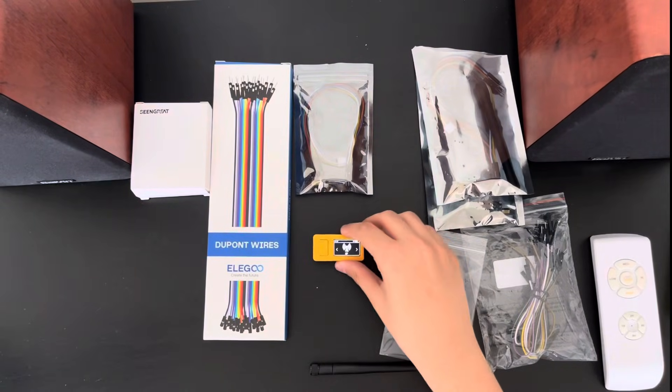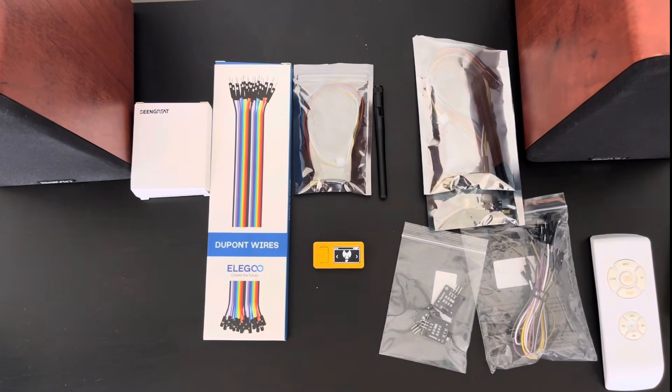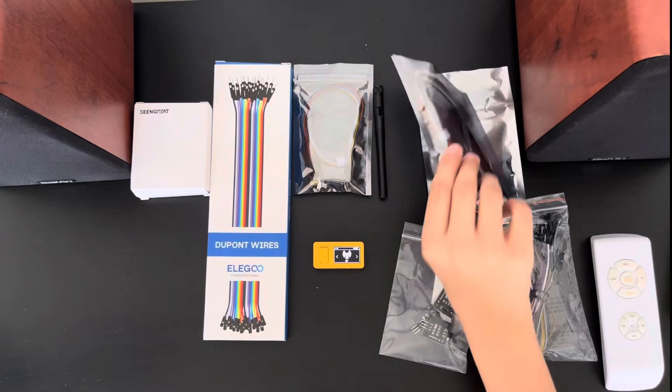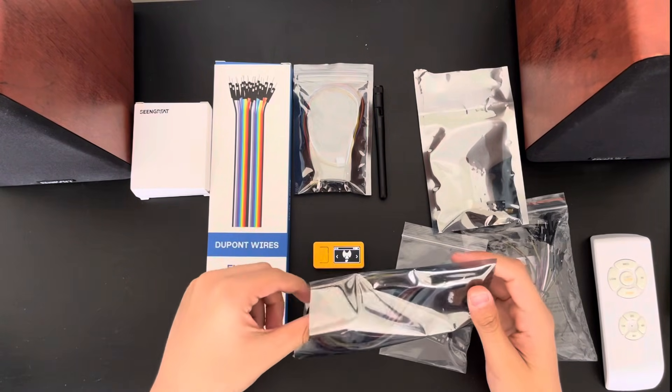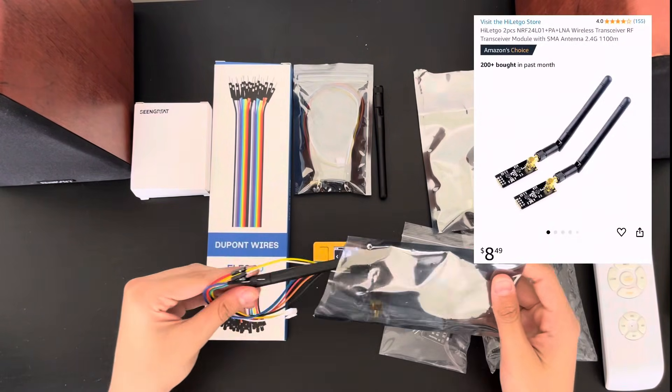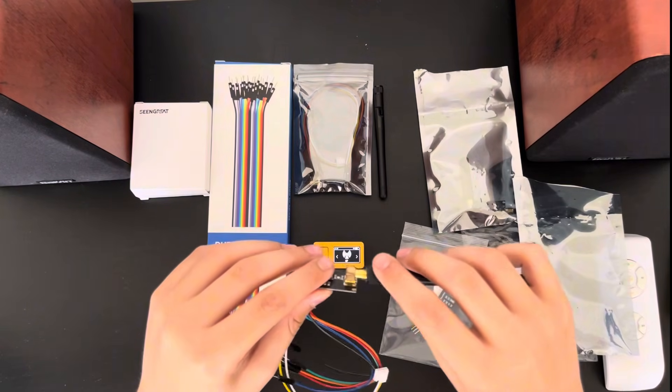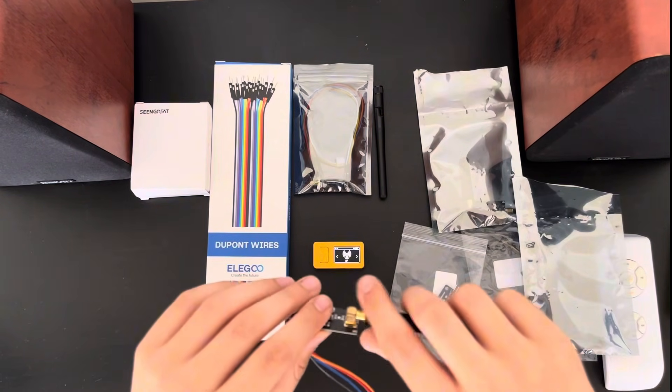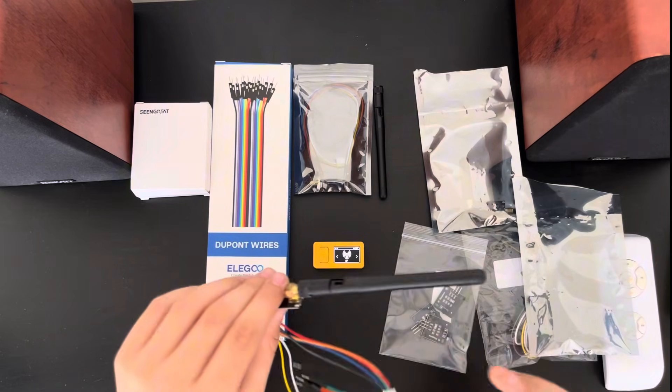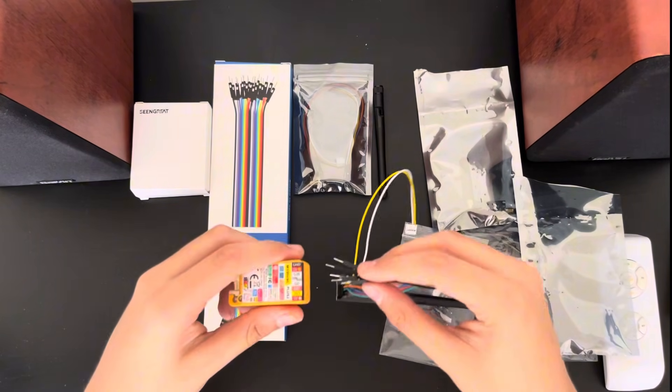So now that we've finished the RF module, we're going to start with the NRF 24 module. This module is the NRF 24 L01. This thing is 2.4 gigahertz. This thing can also do jamming with like Wi-Fi signals and Bluetooth. I'll show you guys that later. To connect it is the same way of what I did before.